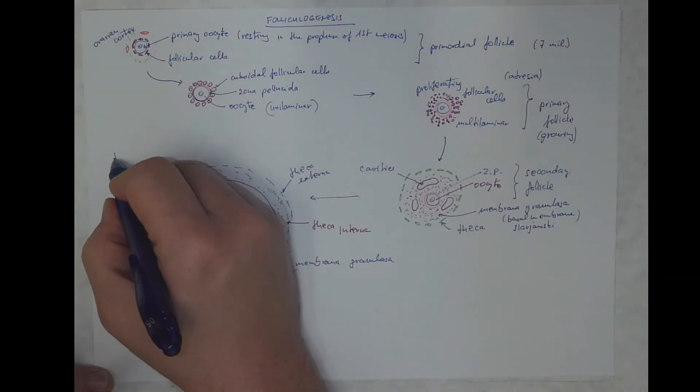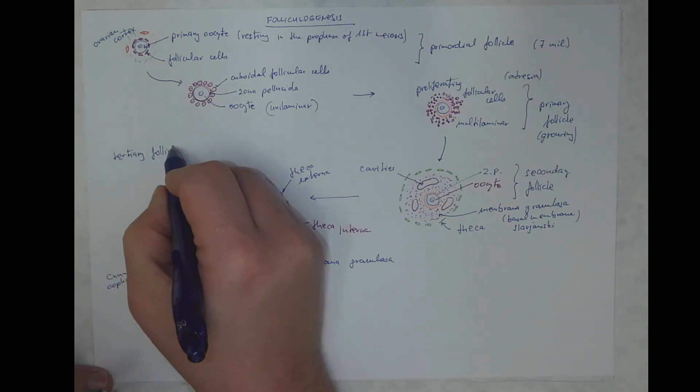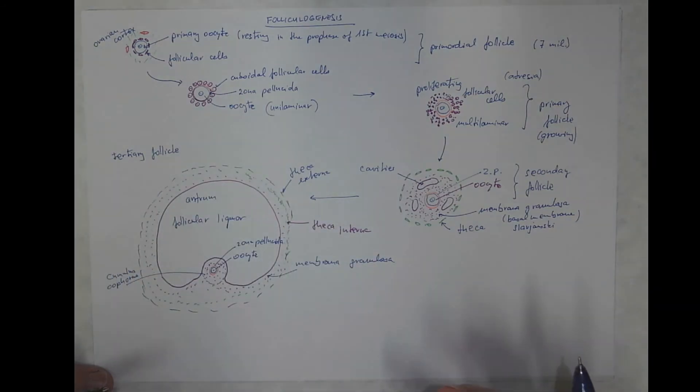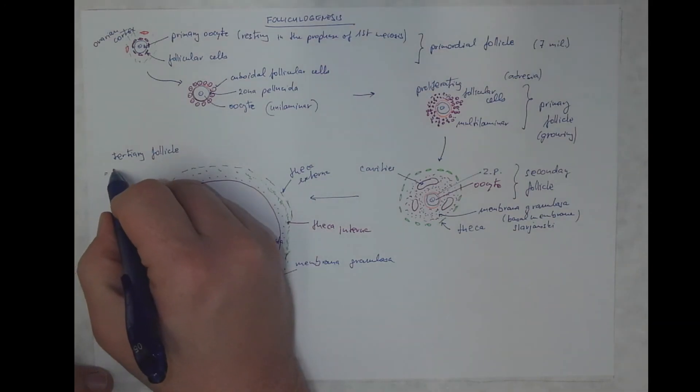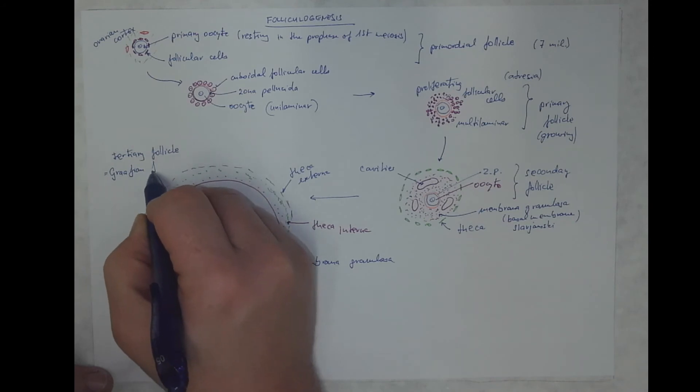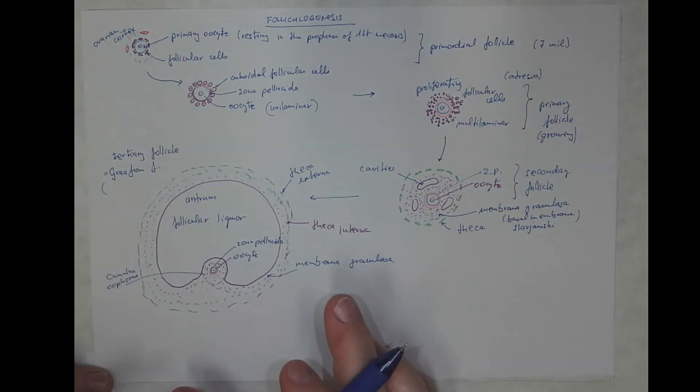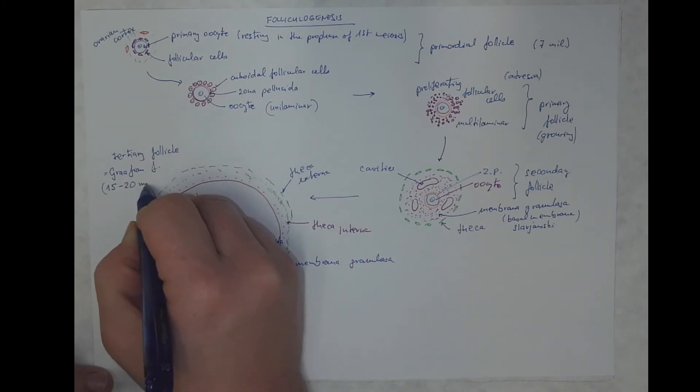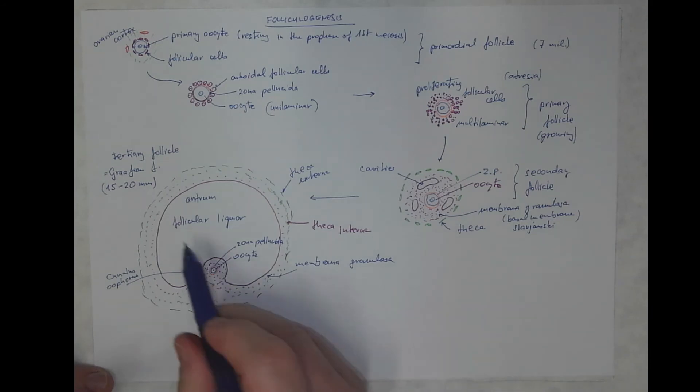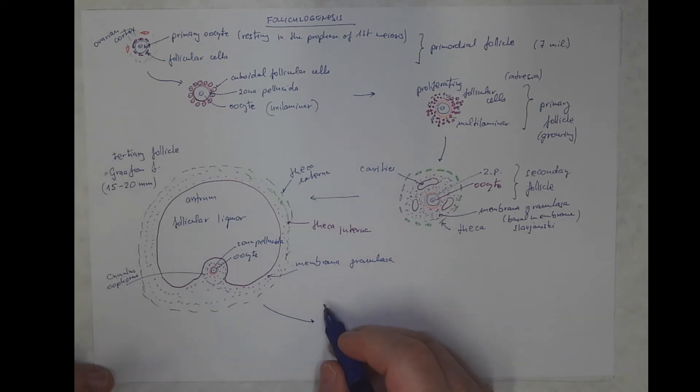So this is the theca interna and the theca externa. This tertiary follicle and its final shape, where it's really large, is also called Graafian follicle, and it's a macroscopic body with a diameter of approximately 15 to 20 millimeters, which is good to know because you can see it with the ultrasound bulging in the ovarian cortex.